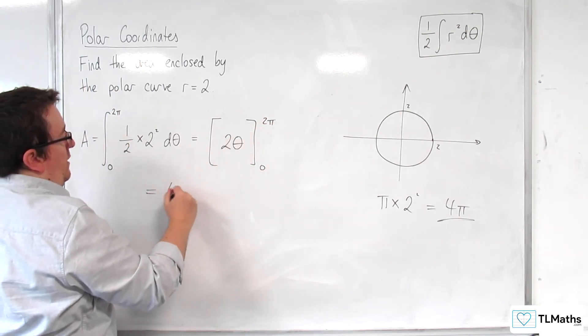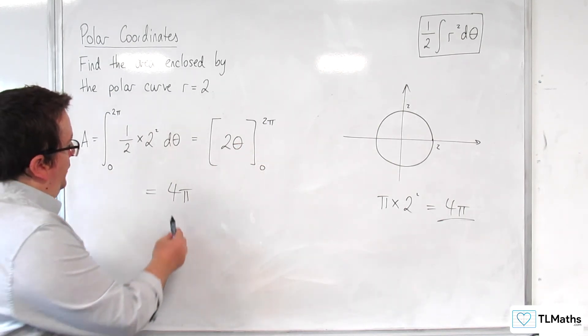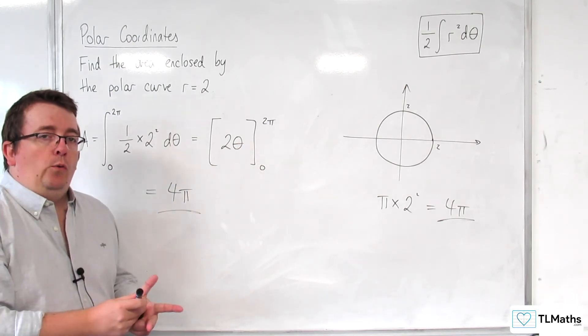So substitute the 2 pi in we get 4 pi, substitute the 0 in we get 0 and so it matches what we expected.